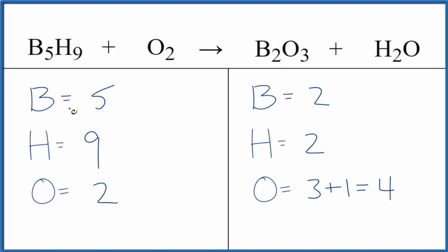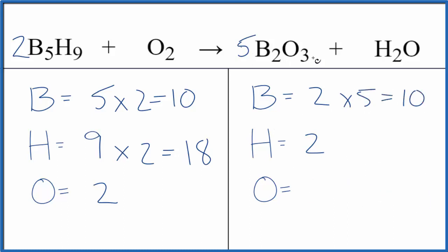Let's try to get the boron here to an even number. So we could multiply this by two. We could put a five here. Two times five, that would give us ten. And let's update the oxygens. Three times five, that gives us fifteen plus the one. Now we have sixteen.